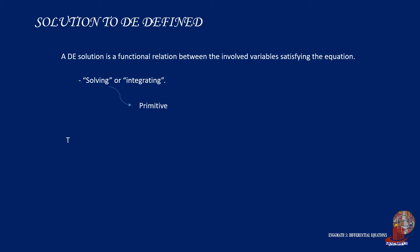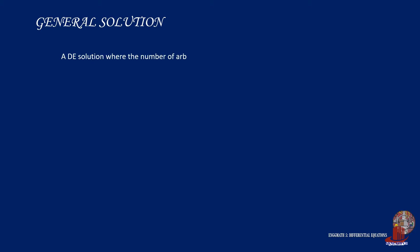There are two types of DE solutions. One is known as the general solution and the other is the particular solution. The general solution is the type of simplification of the differential equation where derivatives are extracted but arbitrary constants appear.